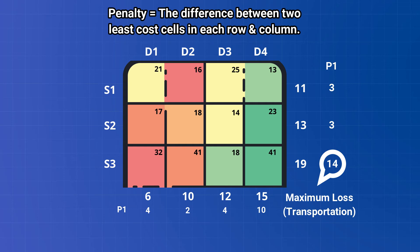Now this penalty is indicating loss due to the transportation system, so the maximum penalty column or row would be allocated first. Now allocation will be made in the cell in which cost is minimum. So we will make an allocation of 12 here.